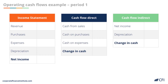Johannes had cash purchases of $250,000, which we record on the income statement as an expense — also referred to as cost of goods sold. We then record cash purchases of $250,000 on the direct cash flow statement. Johannes also has cash sales of $370,000, which we record as revenue on the income statement and as a cash inflow on the direct cash flow statement.